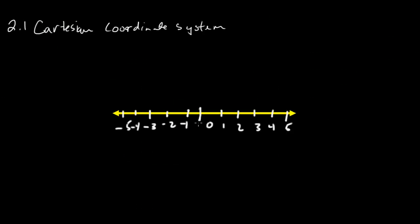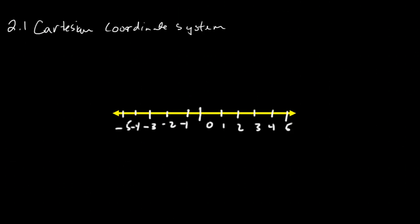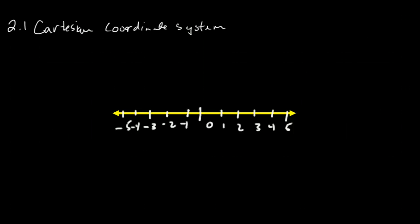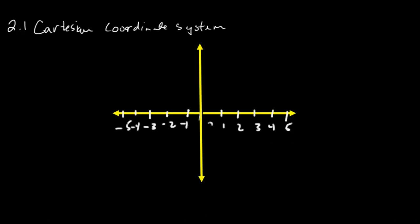Well, what Descartes did was say, what would happen if I were to take a second number line, rotate it 90 degrees, and set it right at the origin.